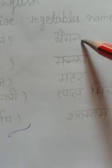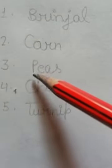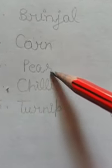First we read and learn. B-R-I-N-J-A-L, brinjal. Brinjal means bangan. Number two, C-O-R-N, corn. Corn means makkah. Number three, P-E-A-S, peas. Peas means matar.